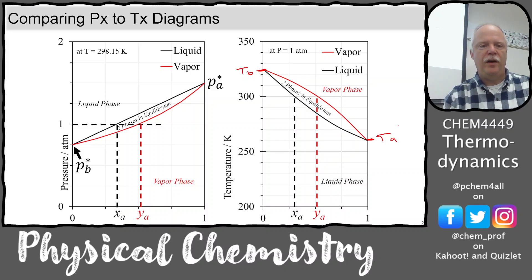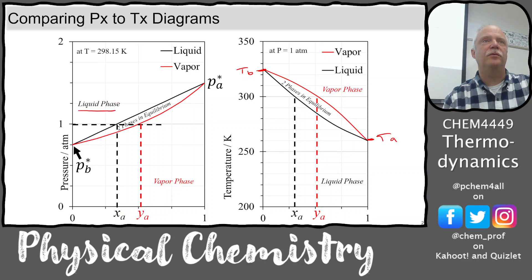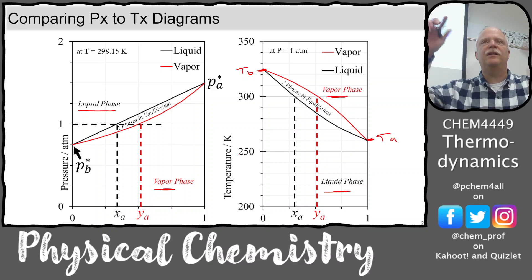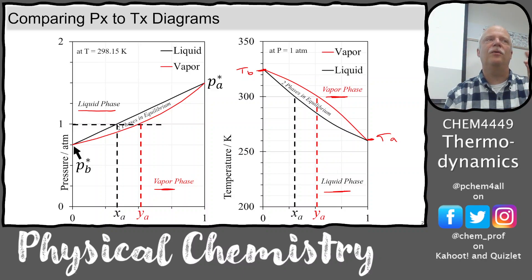Remember over here on the left we had the liquid phase was the high pressure region, it was pure liquid. Now the high temperature region is vapor, and the cold temperature region is liquid. The low pressure region was vapor. So these have all flipped places. So you really have to know: are we looking at a PX phase diagram or a TX phase diagram?